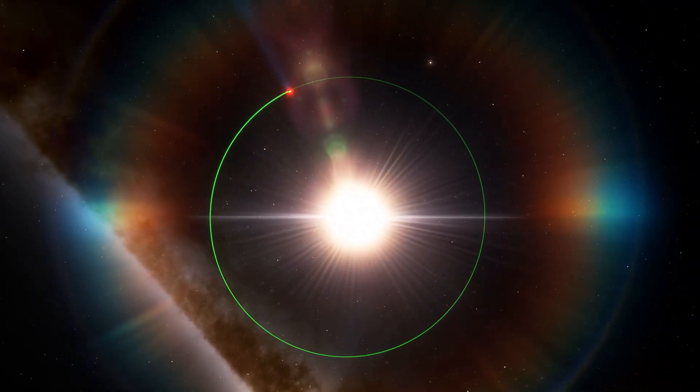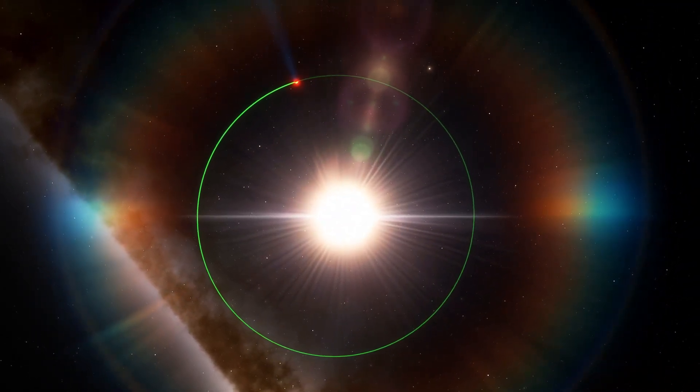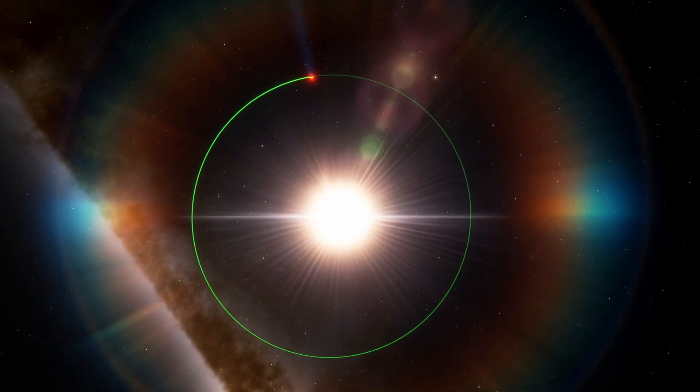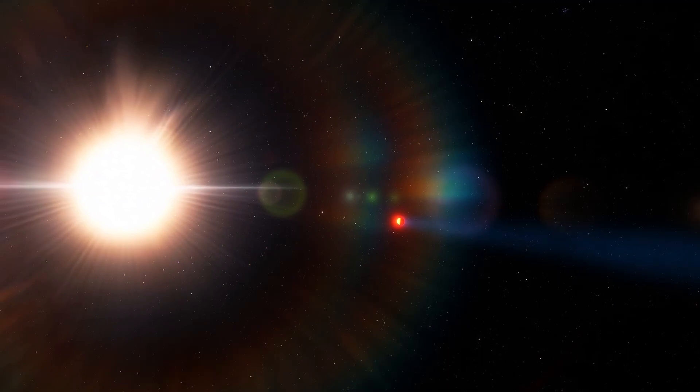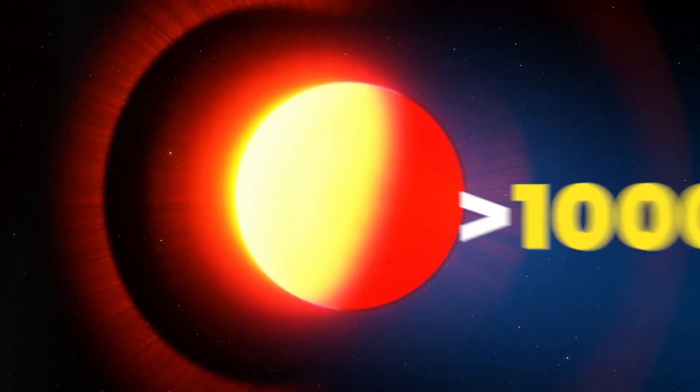WASP-96b is much puffier than any planet orbiting our sun, and with a temperature greater than 1,000 Fahrenheit, it is significantly hotter. WASP-96b orbits extremely close to its sun-like star, just one-ninth of the distance between Mercury and the sun, completing one circuit every three and a half Earth days.